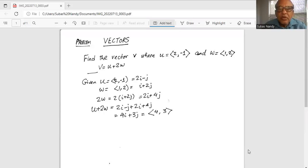So u, the endpoints are 2 and minus 1, so it can be written as 2i minus j and w, the endpoints are 1 and 2, so it can be written as 1 times i plus 2j.